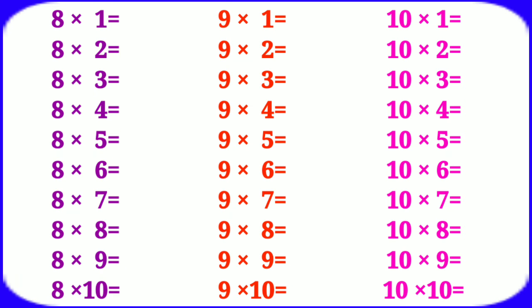Table of 8: 8 ones are 8, 8 twos are 16, 8 threes are 24, 8 fours are 32.